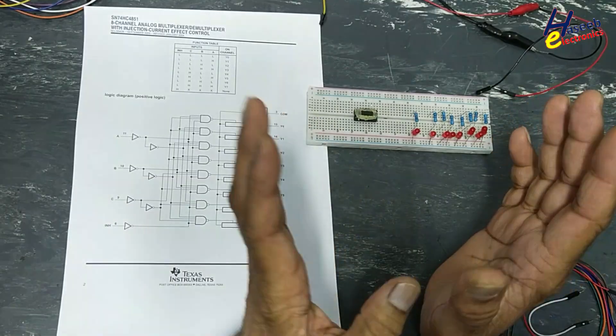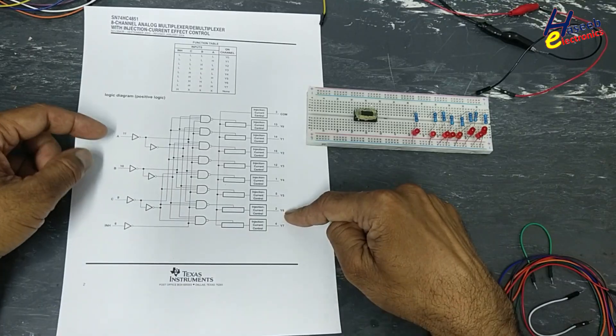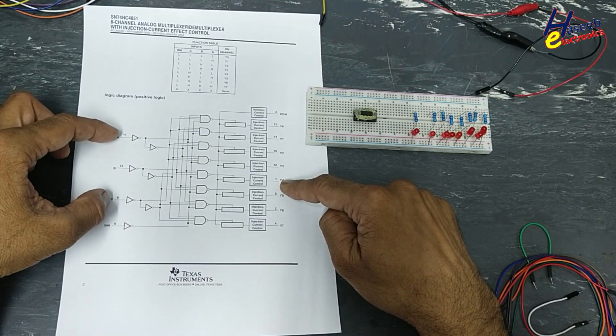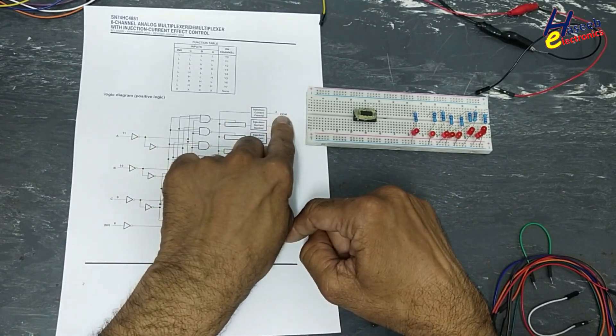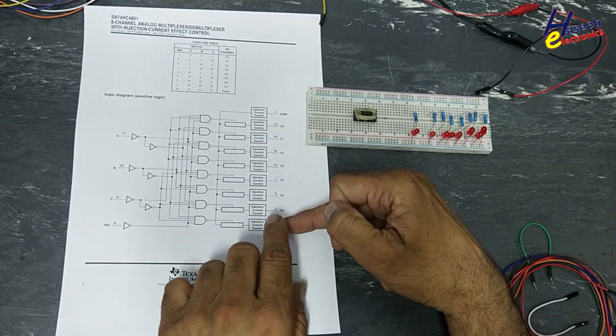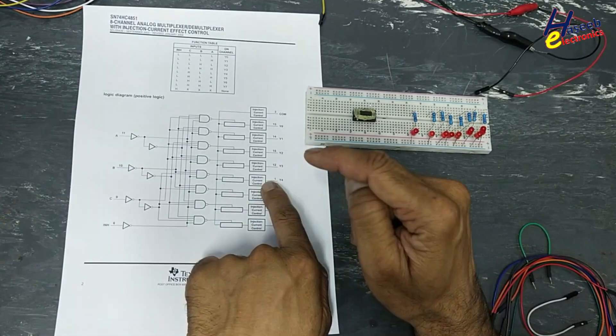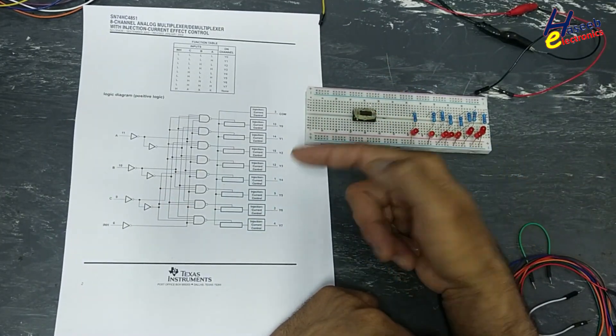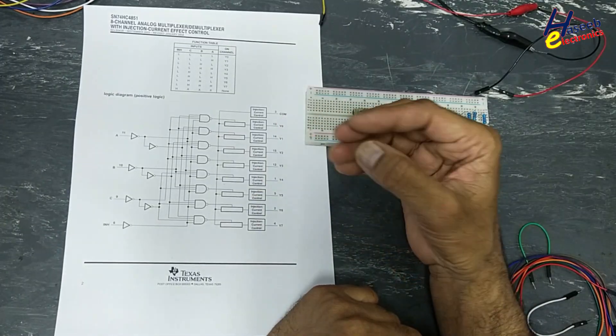It is used in two different ways. First, we have eight lines. We select any specific line by these addresses. Data on that line will reach the common out. We have eight signals, we select a specific signal by addresses, and that selected signal will reach at common out. At a time, one line will reach to common. So it is an eight to one line multiplexer.